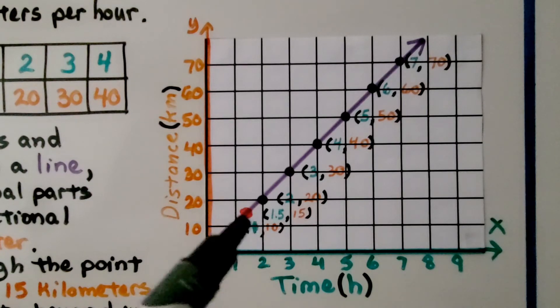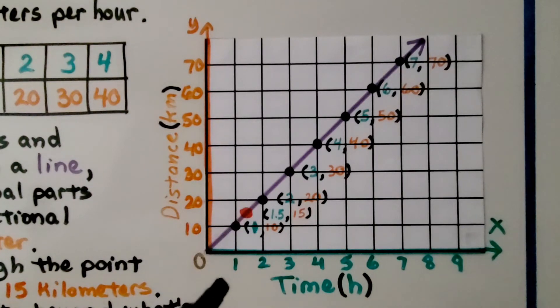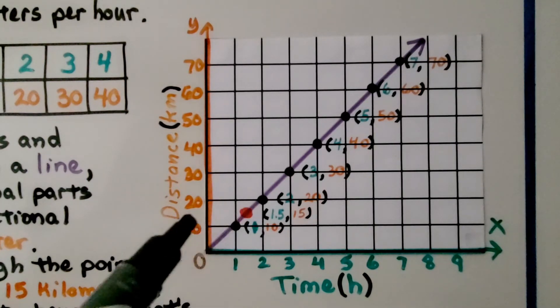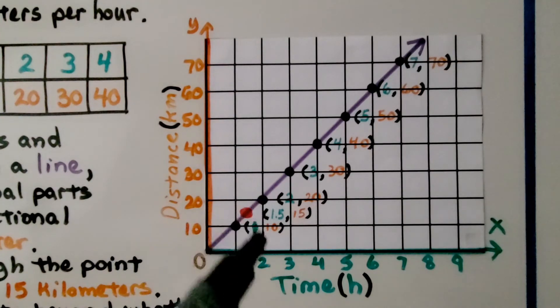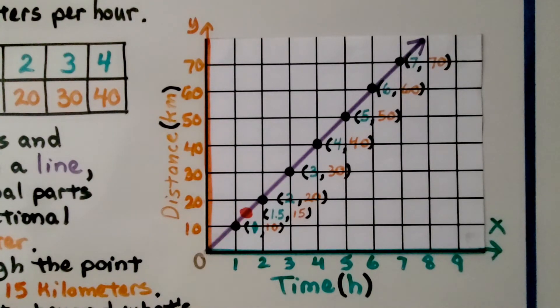Well, if we put a point right here at 1 and a half, he would be going 15 miles and that's correct. So we can also see data beyond what's shown in the table by following the line up to the right.